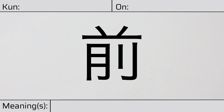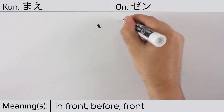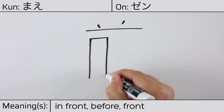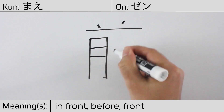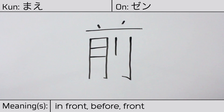Welcome to this lesson on Japanese kanji. Today, we'll be discussing this character. This kanji has a kunyomi or Japanese reading of mae, and it has an onyomi or Chinese reading of zen. This character has the meanings in front, before, or front. Here is the stroke order.